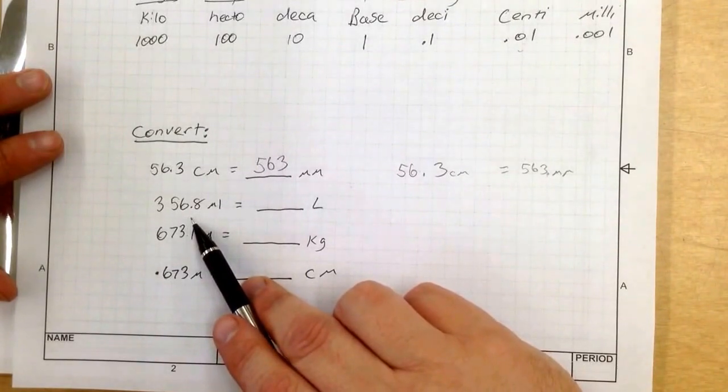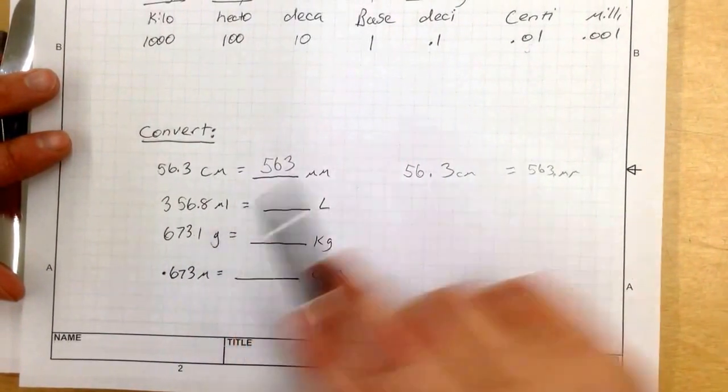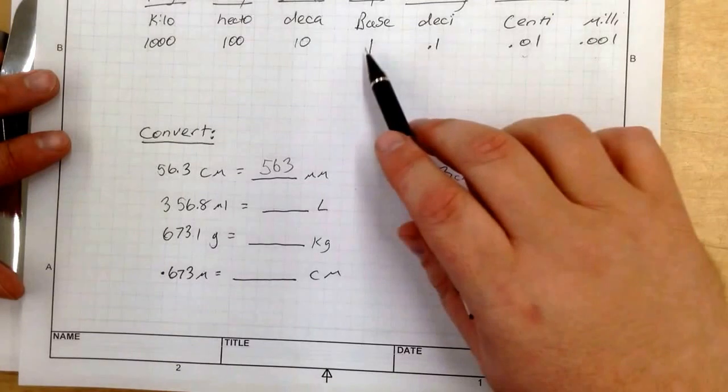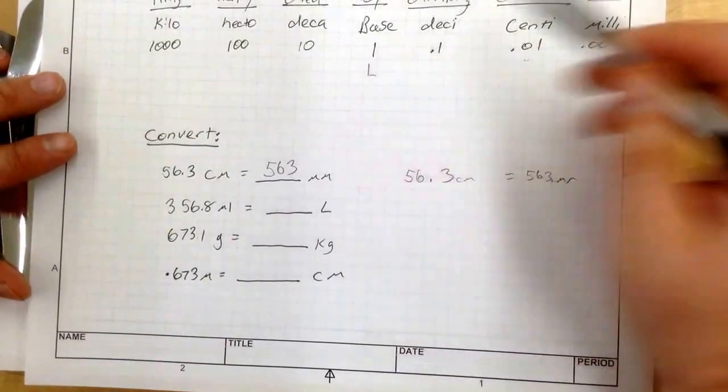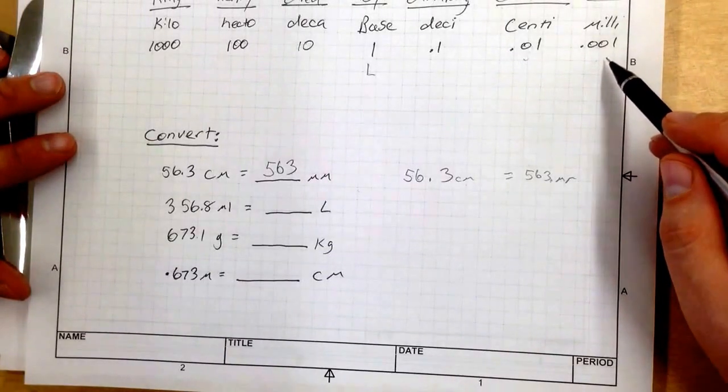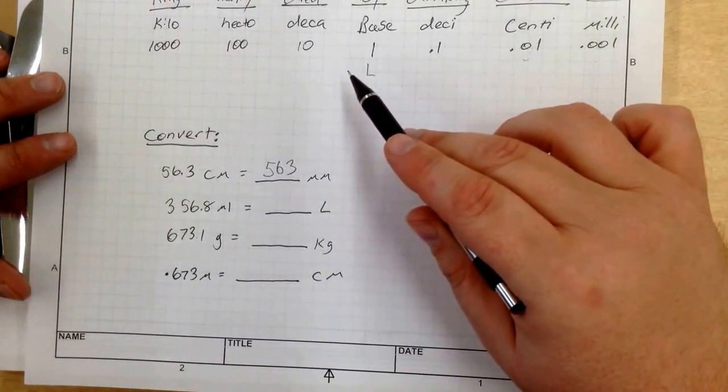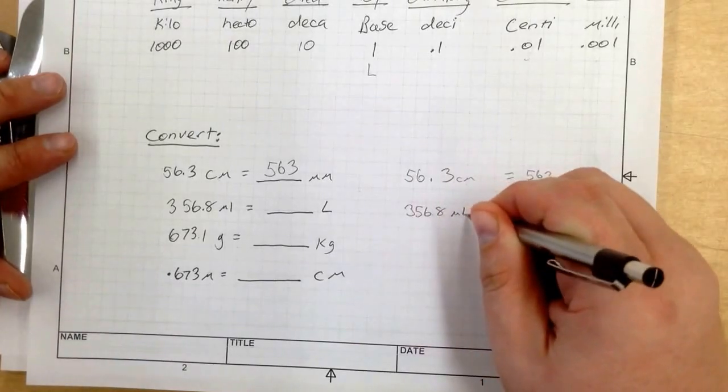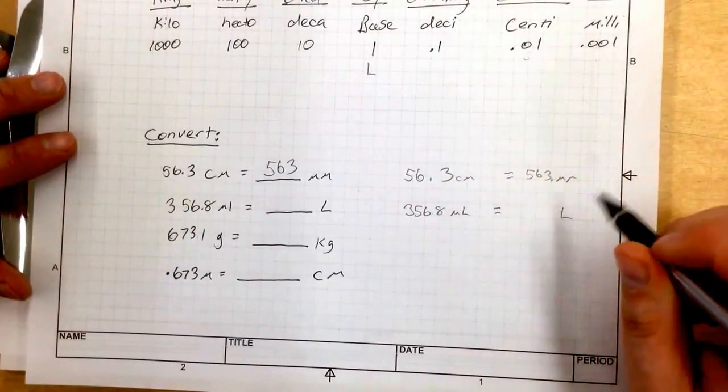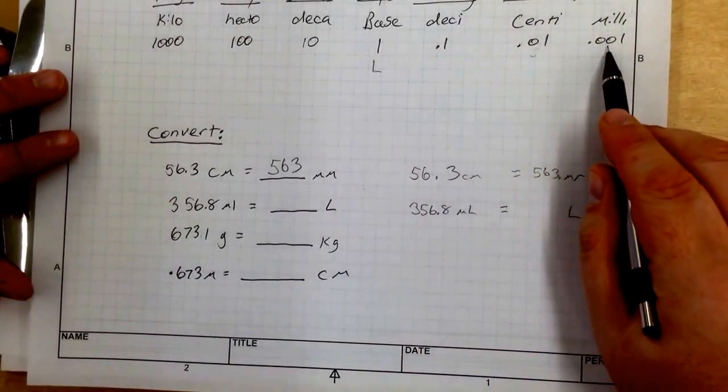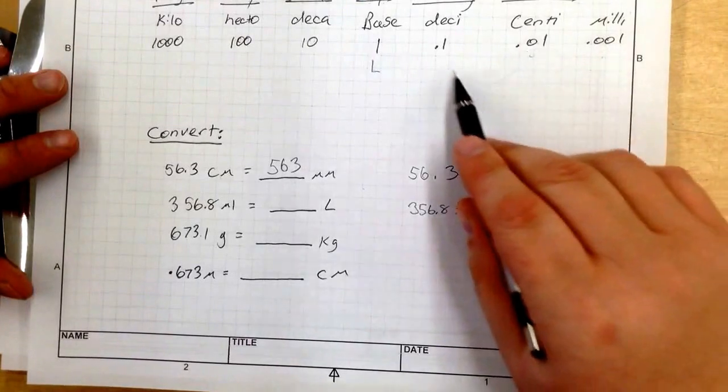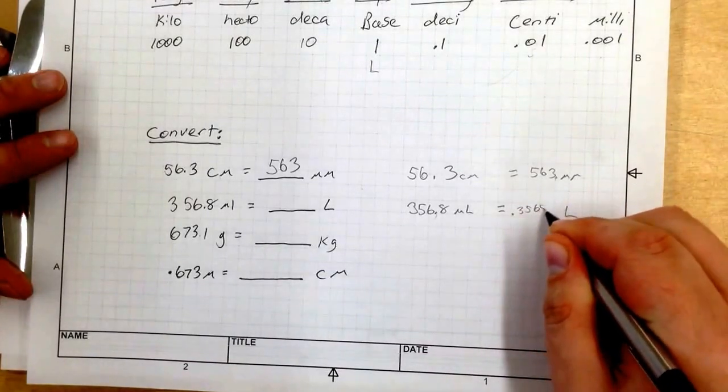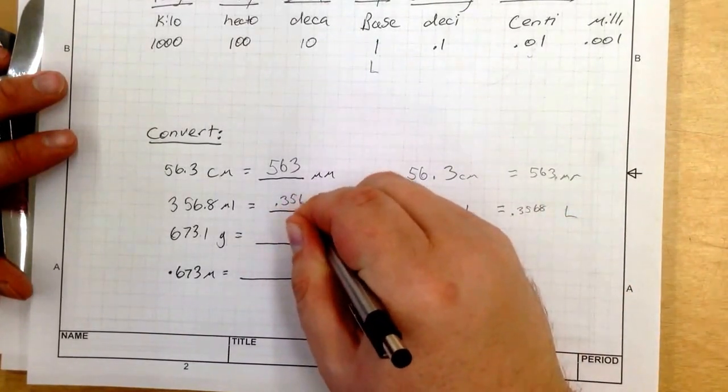Now let's look at 356.8 milliliters. So I've got milliliters right here. Now it wants me to convert it to liter. And liter is a base unit. So I've got L right there for a base unit. So what I need to do is go 1, 2, 3. So 356.8 milliliters equals how many liters? So there's my decimal point. There's milliliters. Milliliters is 1, 2, 3 units over. So 1, 2, 3. So it is 0.3568, 0.3568 liters.